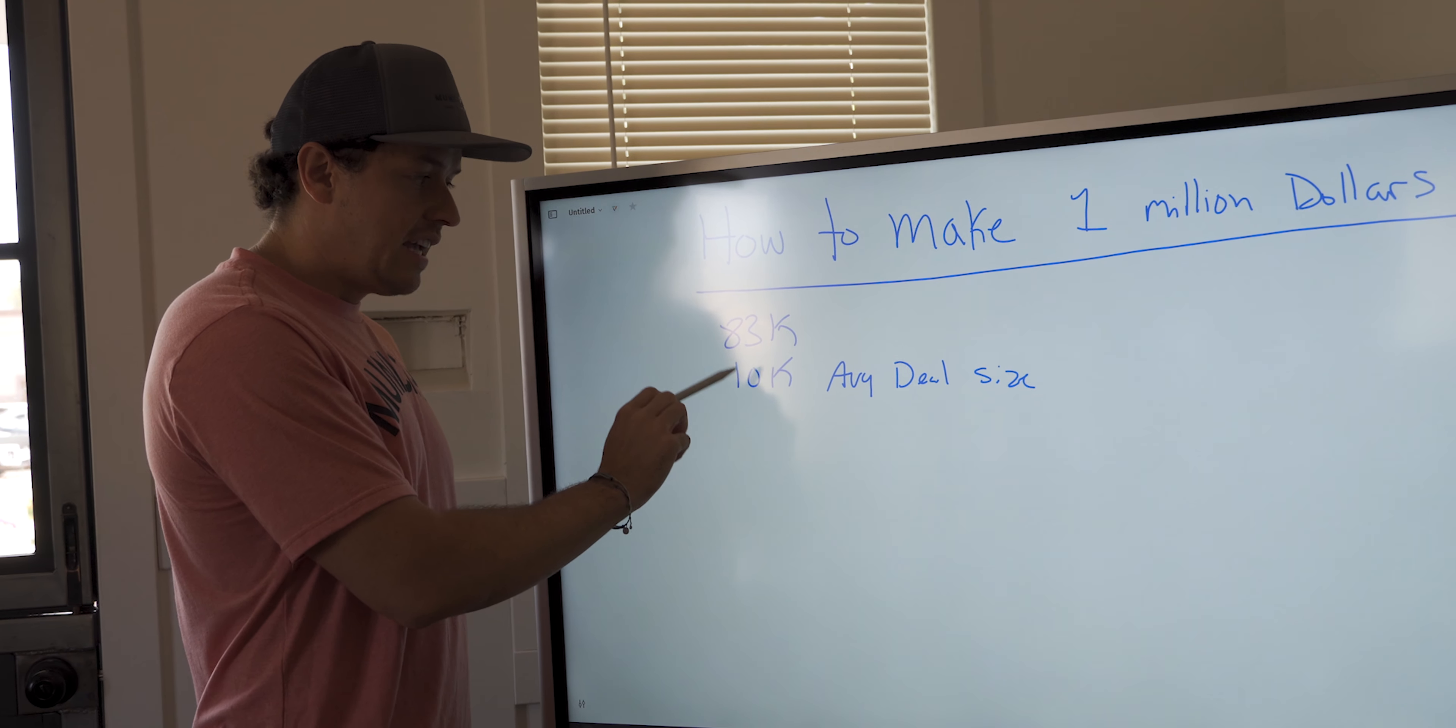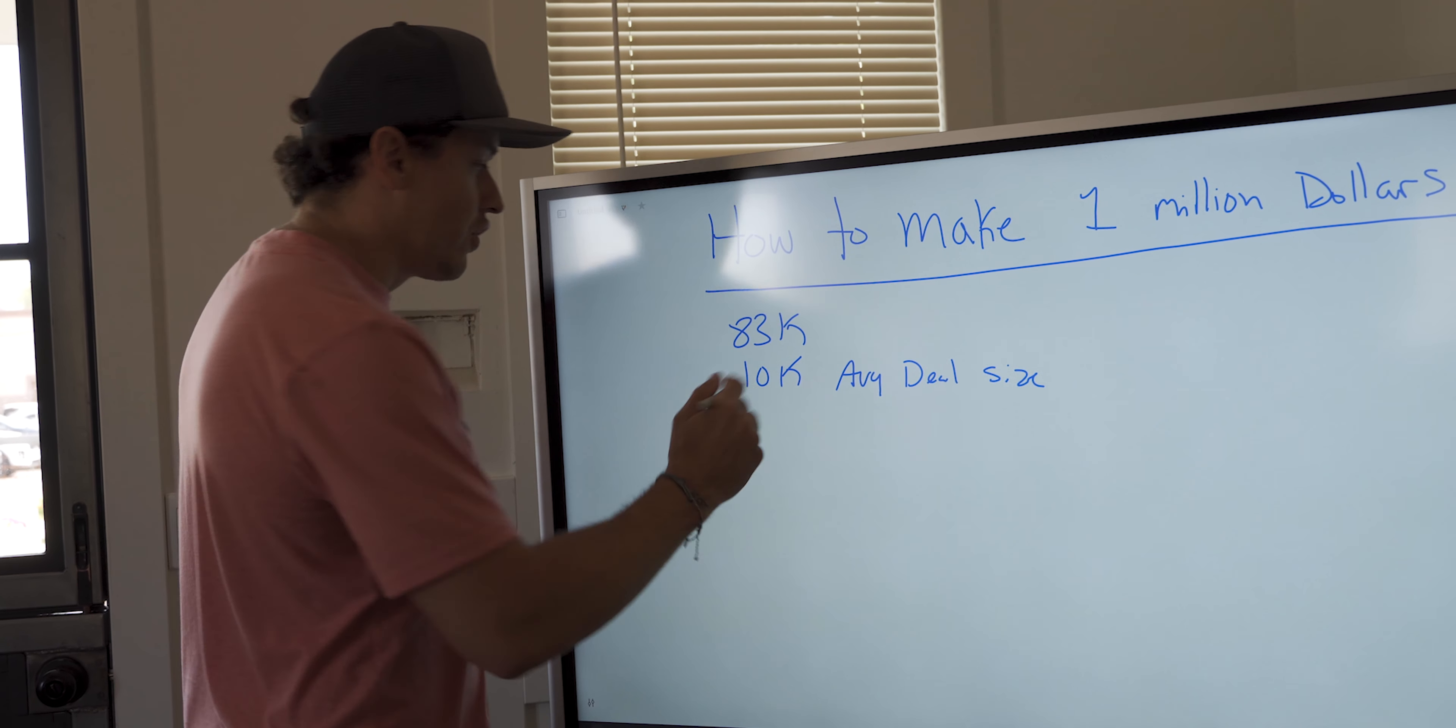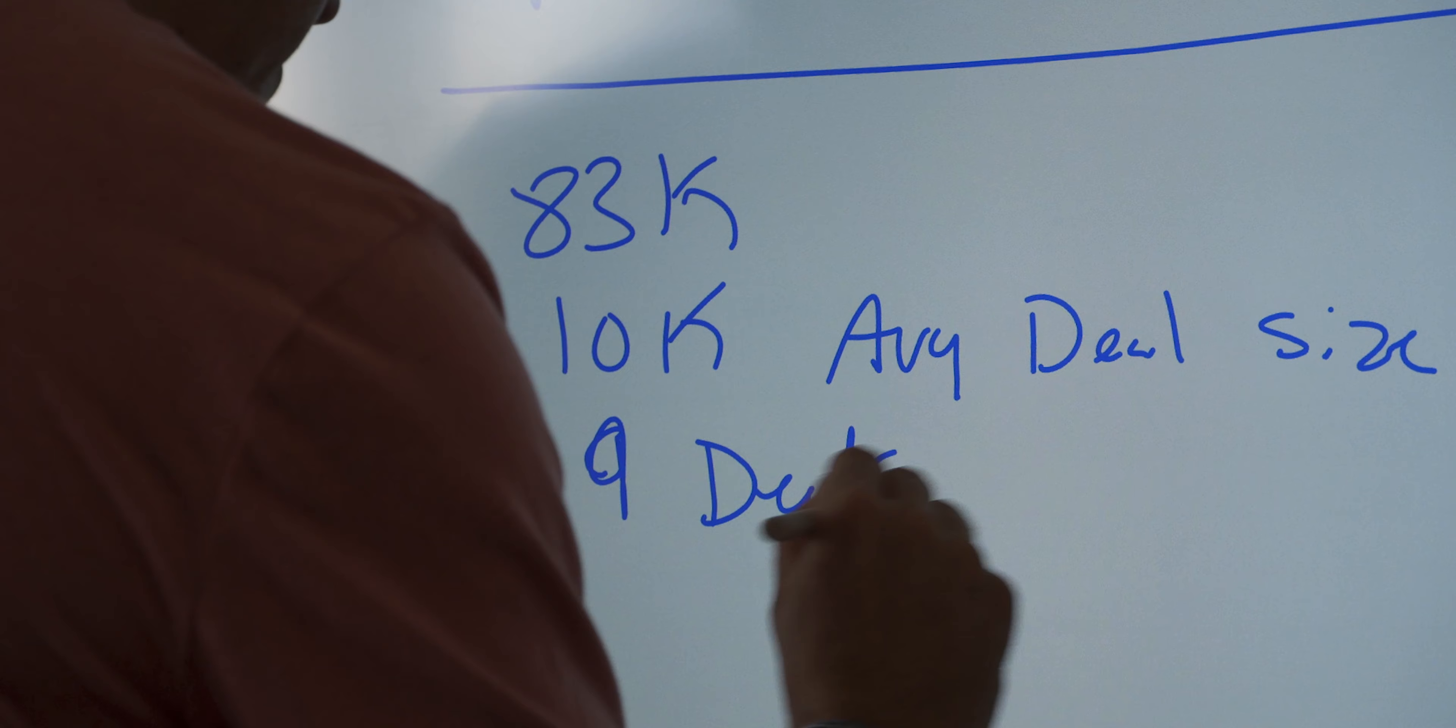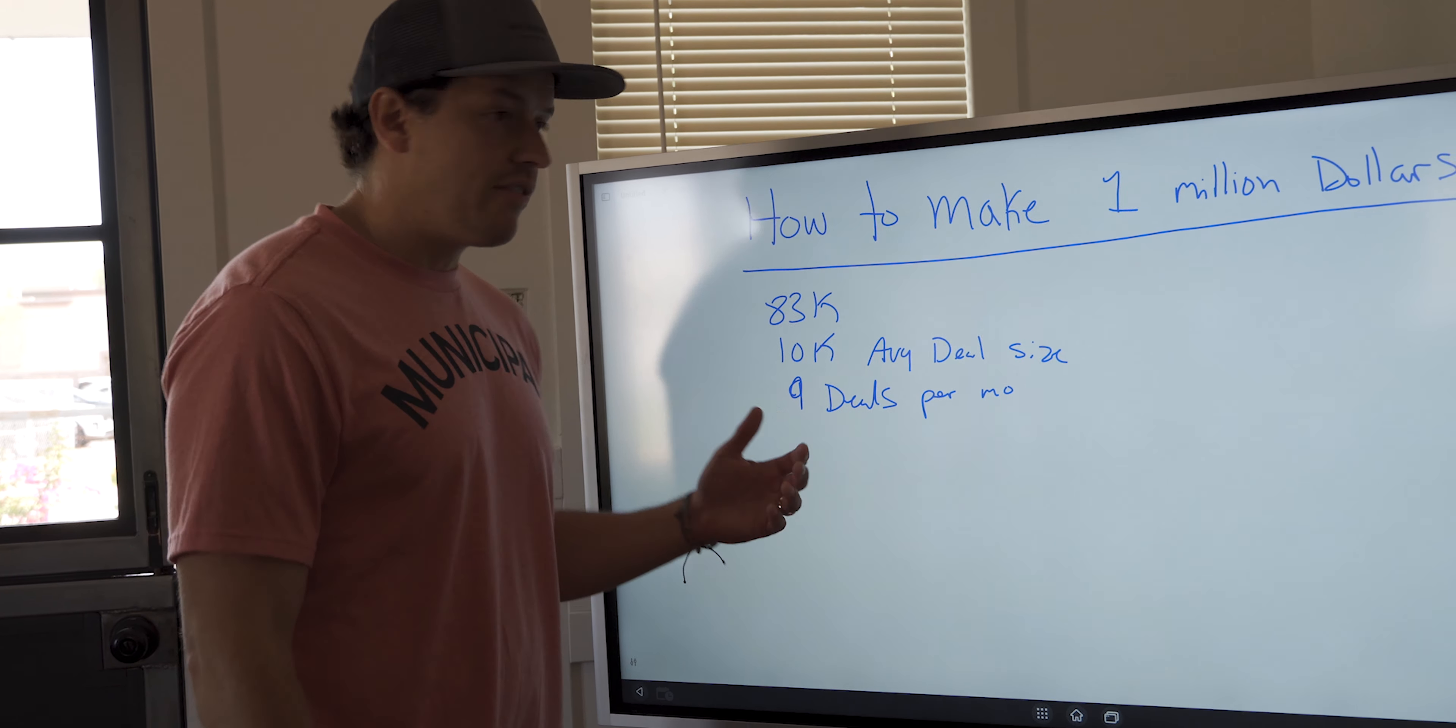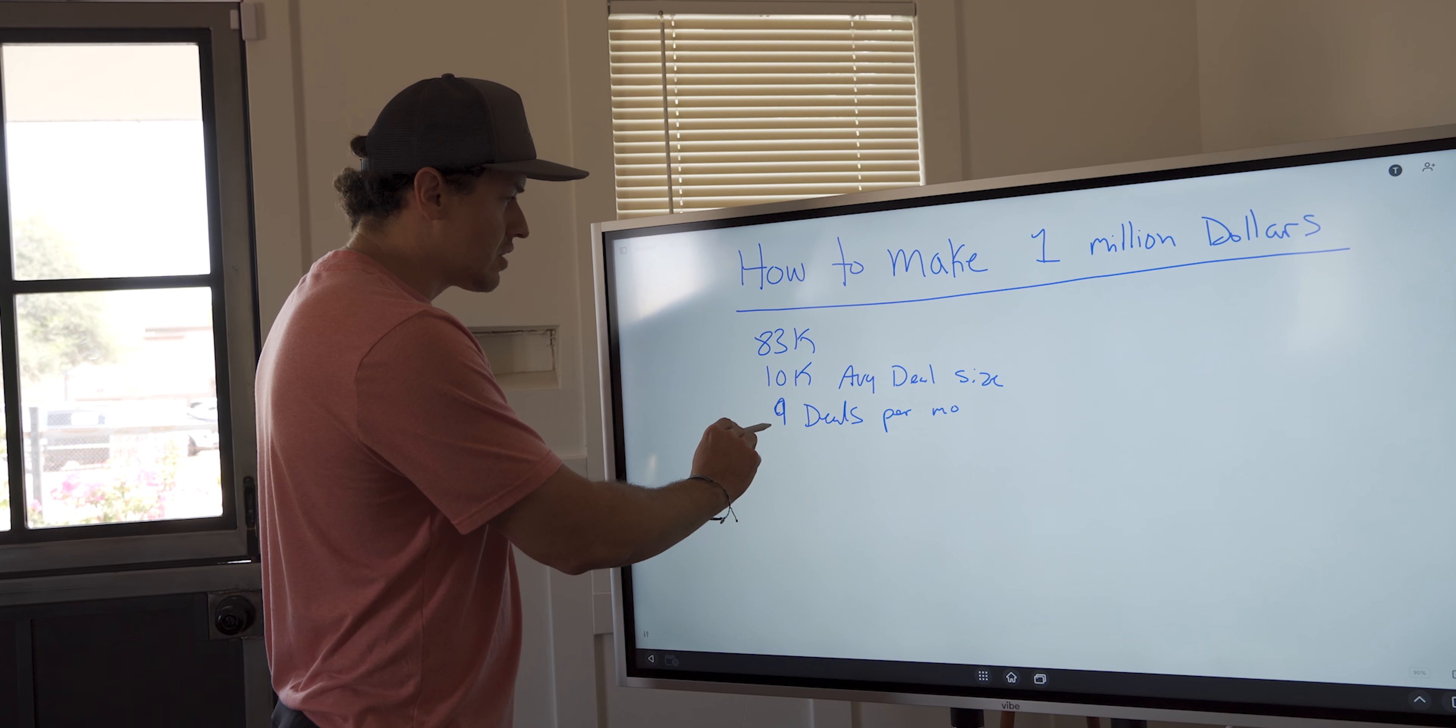I need to reverse engineer. If I know I make $10,000 every time I do a deal, how many do I need to do that month? 8.3. So for this, let's go ahead and say nine. Nine deals per month is what I need to achieve. That's going to bring me $90,000 in revenue, surpassing the $83,000 a month that I need to hit a million. So now I know I need to do nine deals a month.